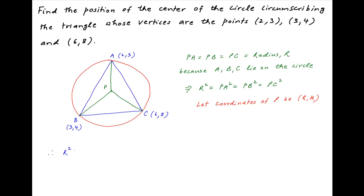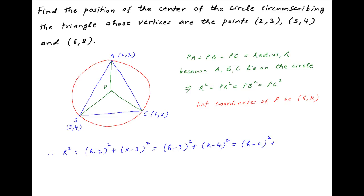Therefore, R² = PA² = (H−2)² + (K−3)² = PB² = (H−3)² + (K−4)², and this is equal to PC² = (H−6)² + (K−8)².